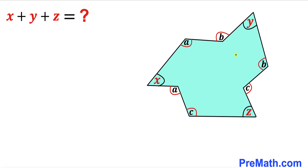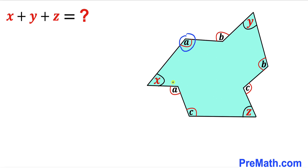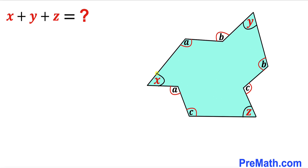Welcome to pre-math. In this video we have got this polygon as you can see in this diagram, such that these are our angles x, y, and z. Moreover, these angles are labeled as a, these angles are labeled as b, and finally these angles are labeled as c. Now we are going to calculate the sum of these three angles x, y, and z.